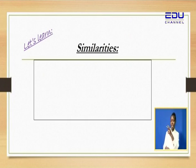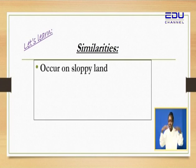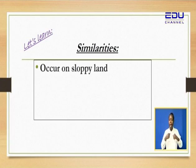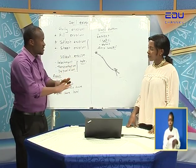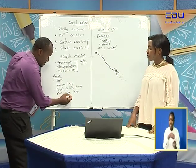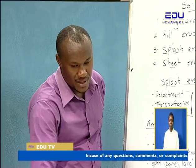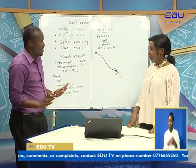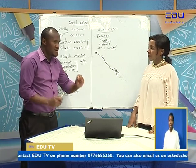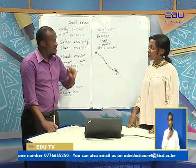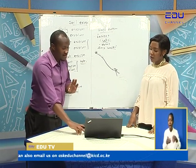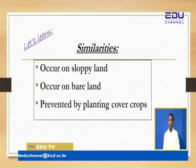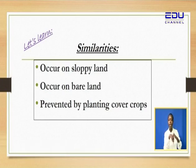Let's look at some of the similarities between sheet erosion and splash erosion. One — both occur on slopey areas. Another similarity — both occur on bare land. The key word is bare. That's why I always say please plant cover crops — always plant cover crops.